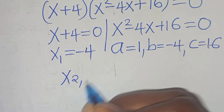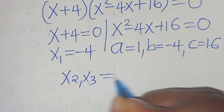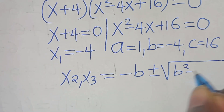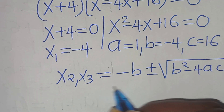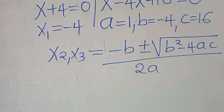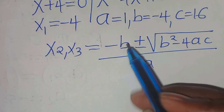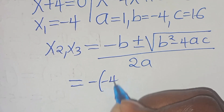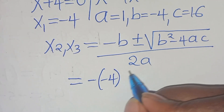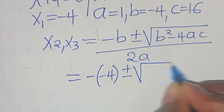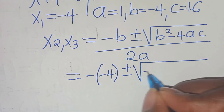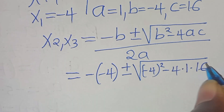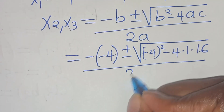To solve for x₂ and x₃, we apply the quadratic formula: minus b plus or minus the square root of b squared minus 4ac, divided by 2a. Substituting the values: minus minus 4, plus or minus the square root of minus 4 squared minus 4 times 1 times 16, divided by 2.